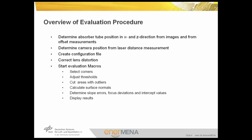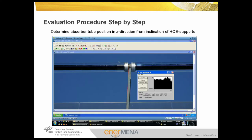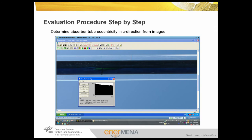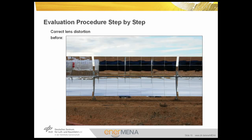From the slope errors, focus deviations can be calculated and also intercept values via ray tracing. Finally, the results are displayed in slope error maps, focus deviation maps, and intercept value maps, together with statistical results on a panel and module level. The first step of the evaluation procedure is to determine the absorber tube position and direction of the optical axis from the inclination of the absorber tube supports. From the known length of the absorber tube support and the angle between the mirror edge and the absorber tube support, we can calculate the height of the pivot point above the vertex. From the images of the absorber tube, which also show the glass envelope tube, the eccentricity of the absorber tube in the glass envelope is calculated in both z and x direction. Now that we have the exact position of the absorber tube relative to the focal line, we can start with the image processing.